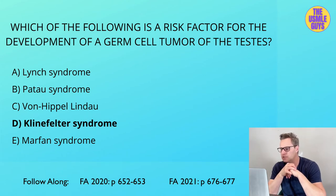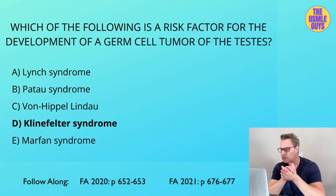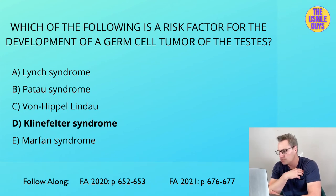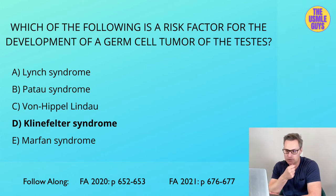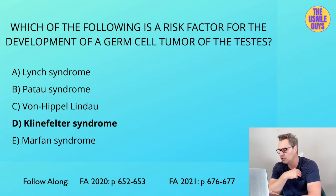The correct answer here is D. When it comes to testicular tumors, germ cell tumors account for the overwhelming majority at around 95%, and sex cord stromal tumors account for around 5%. Germ cell tumors arise from germ cells that produce sperm, while sex cord stromal tumors develop from embryonic sex cord derivatives — i.e., the structures that develop into Sertoli and Leydig cells. Germ cell tumors include the seminoma, embryonal carcinoma, teratoma, yolk sac tumor, and choriocarcinoma, while non-germ cell tumors include the Leydig cell tumor, Sertoli cell tumor, and primary testicular lymphoma.